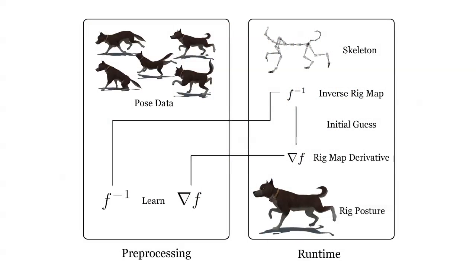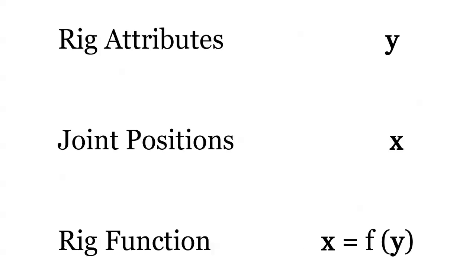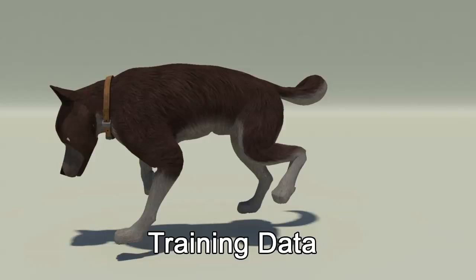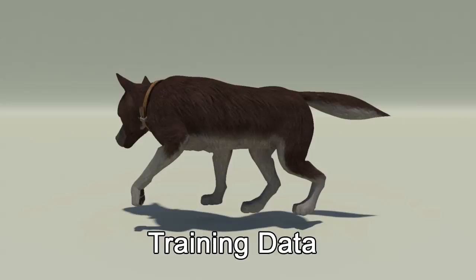We start by considering the rig function. This is the function in the 3D package that generates the joint positions given some rig attributes. We treat it as a black box and learn an approximation of the inverse using data supplied by the animators.